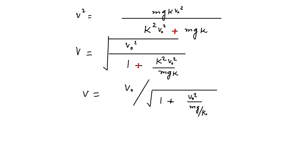One important point: the term (1 + kv0²/(mg)) is always greater than 1. This means the returning velocity v is smaller than v0. In other words, in the returning journey the velocity will be reduced. This is because of the air drag — if there were no air drag, this would not happen. I hope you enjoyed this video; if so, please share with your friends, like this video, and subscribe to my channel. Thank you.